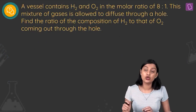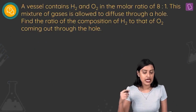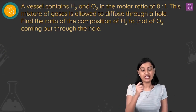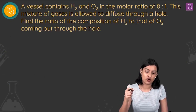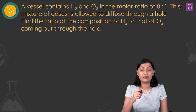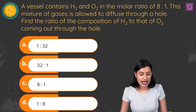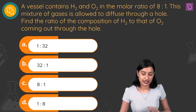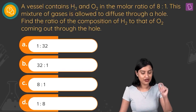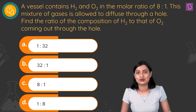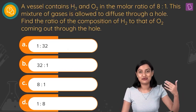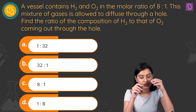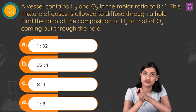The next question says: a vessel contains H2 and O2 in a molar ratio of 8:1. This mixture of gases is allowed to diffuse through a hole. Find the ratio of the composition of H2 to O2 coming out through the hole. The first thing we must identify is which law to apply — we are talking about effusion or diffusion of gases, so we use Graham's law.